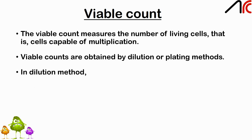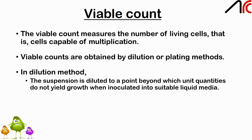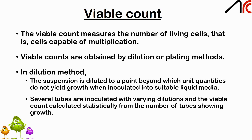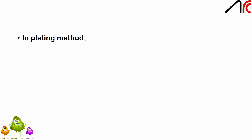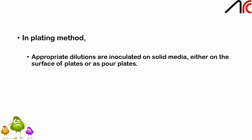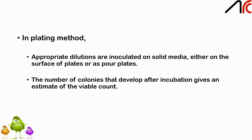Viable counts are obtained by dilution and plating methods. In the dilution method, the suspension is diluted to a point beyond which unit quantities do not yield growth when inoculated into suitable liquid media; several tubes are inoculated with varying dilutions and the viable count calculated statistically from the number of tubes showing growth. This method does not give accurate values. In the plating method, appropriate dilutions are inoculated on solid media, either on the surface of plates or as pour plates; the number of colonies that develop after incubation gives an estimate of the viable count.